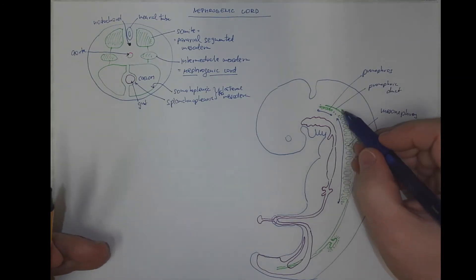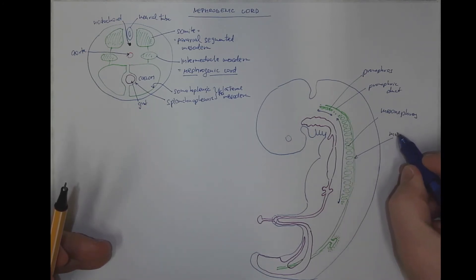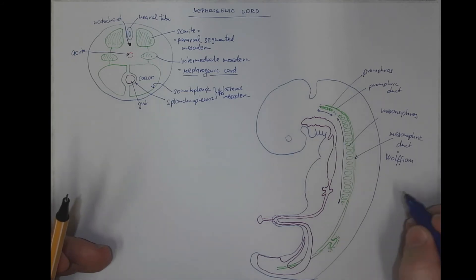It doesn't have a lumen, even in human embryos. But we got a mesonephric duct, also named Wolffian duct. Wolffian duct.